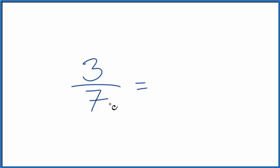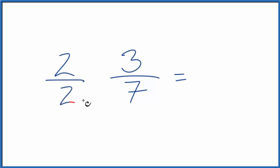So if we multiply 3 sevenths times 1, that wouldn't change the value. But instead of 1, let's multiply it by 2 over 2, because 2 divided by 2, that's equal to 1. So we're not changing the value, just the way we write it.